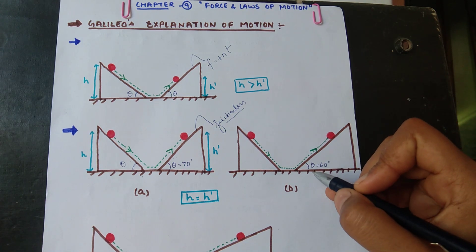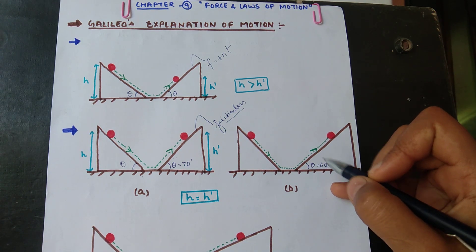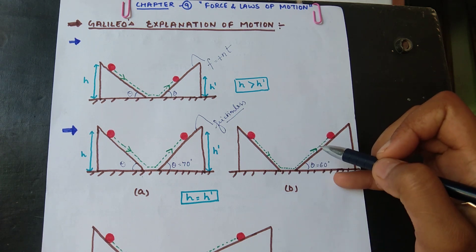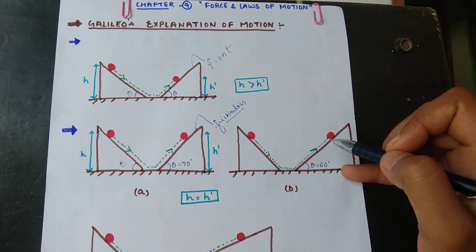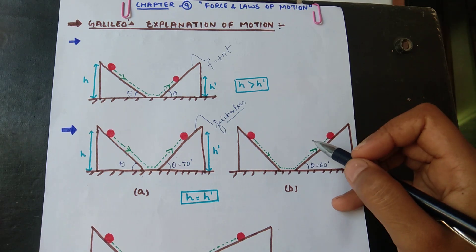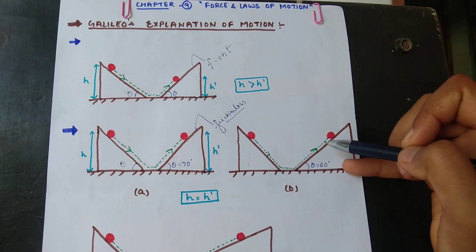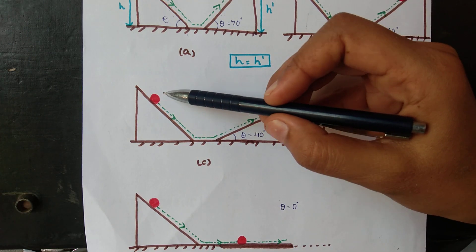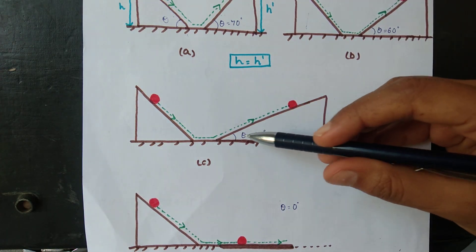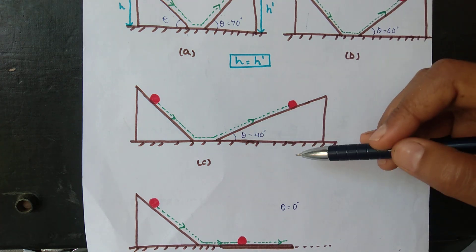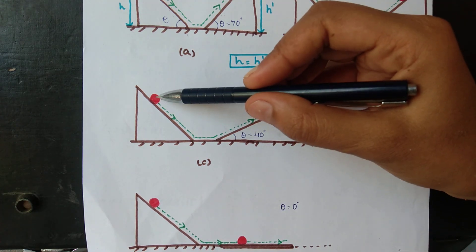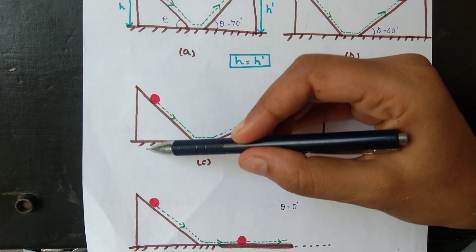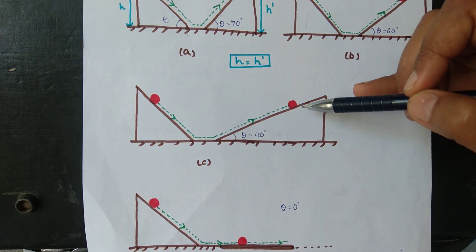Now he began to continuously reduce the angle of the other inclined surface. He reduced it to theta equals 60 degrees, and observed that the ball was still reaching the same height on both sides. He reduced the angle further to 40 degrees, and again when he released the ball, it still went to the same height — this height and that height were the same, on a frictionless surface.